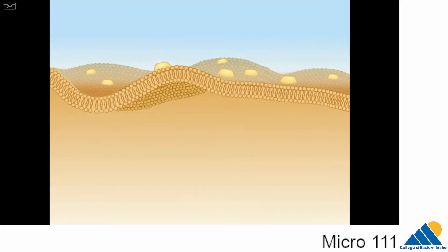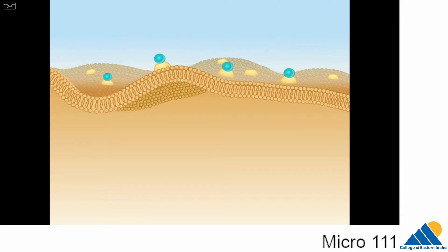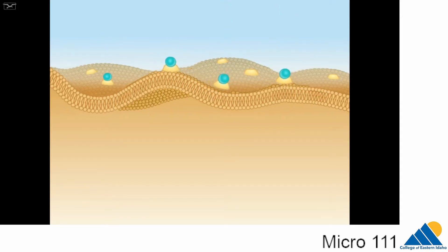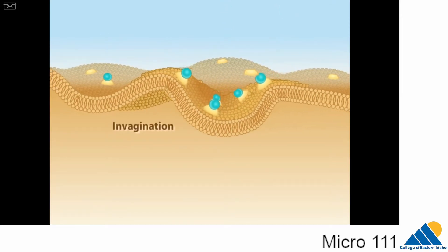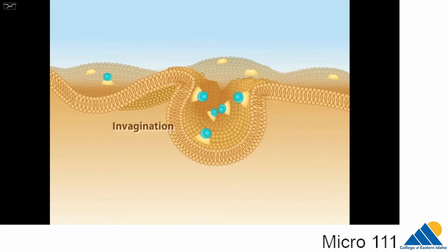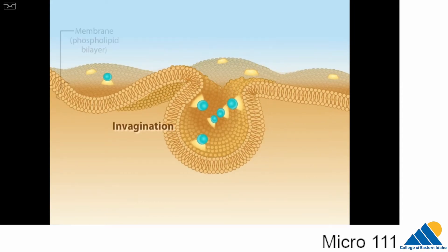Endocytosis is a process by which a cell takes up objects, such as food particles or bacteria, that are too large for membrane transport. Endocytosis is performed by human cells and by eukaryotic microbes, such as amoebas. For endocytosis, a portion of the membrane rearranges by invagination, bending and folding inward to form a pocket. The pocket contains a region of membrane in which cell surface proteins have bound to the food particles.